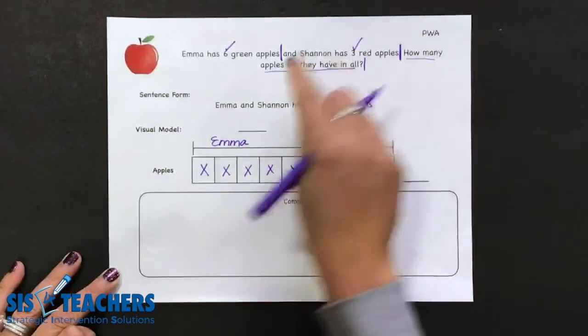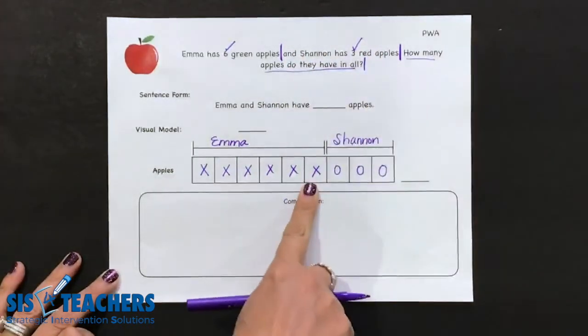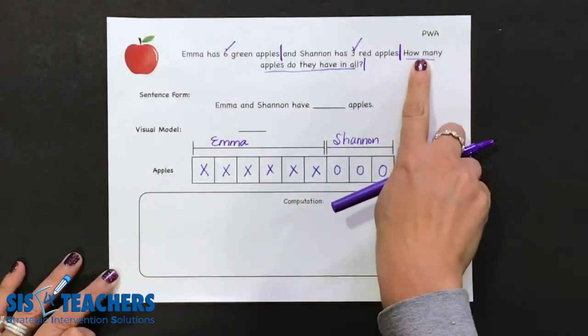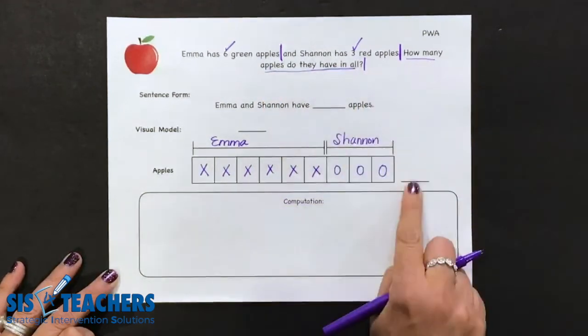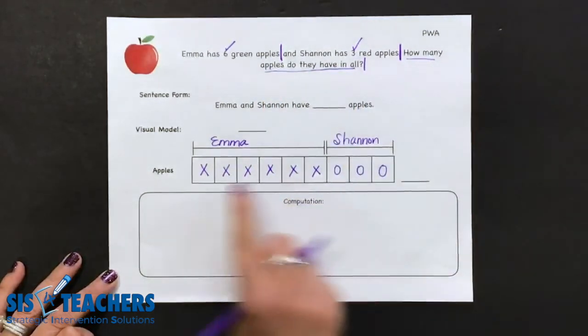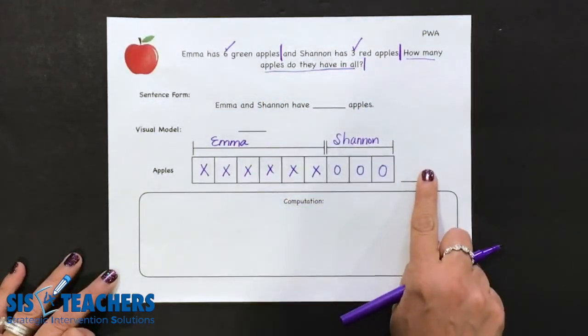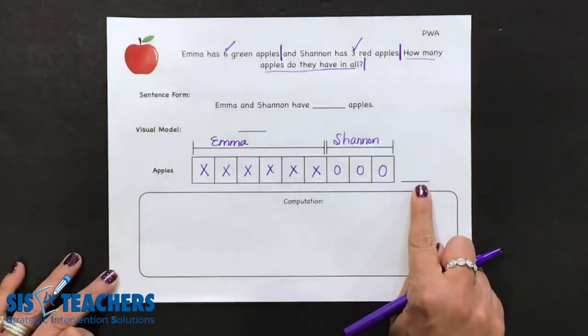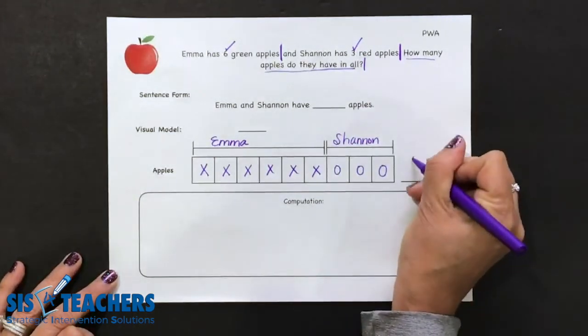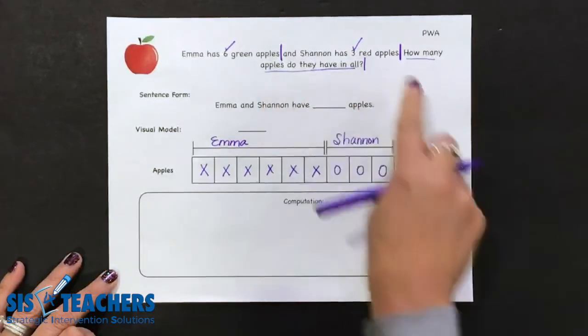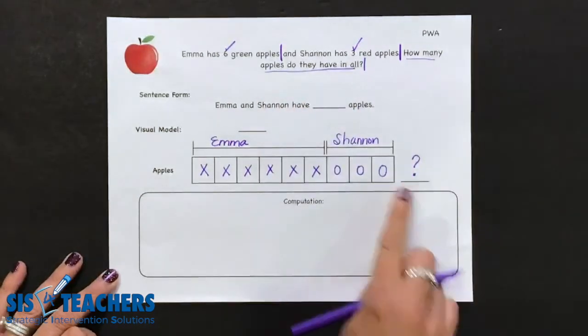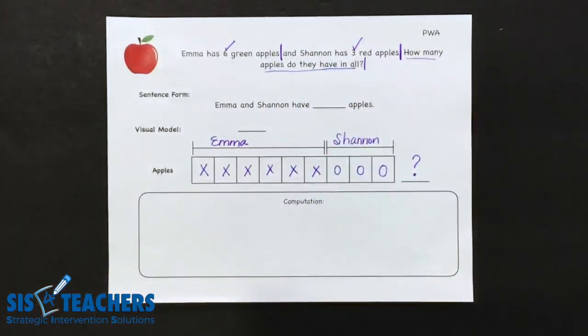Either way, I'm showing the comprehension in this model drawing. The last part of our model drawing says, how many apples do they have in all? I don't want kids to just total this up and put it at the end because they're not going to be doing that as they get older. The question mark goes to the end because that's what the question's asking, how many they have in all? This is a look at a proportional model.